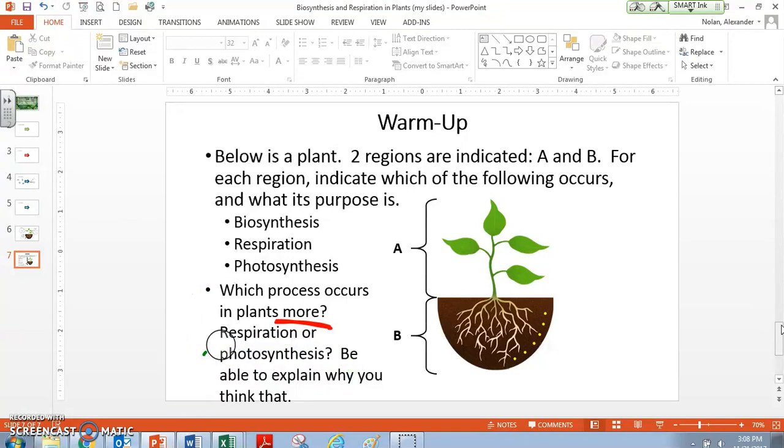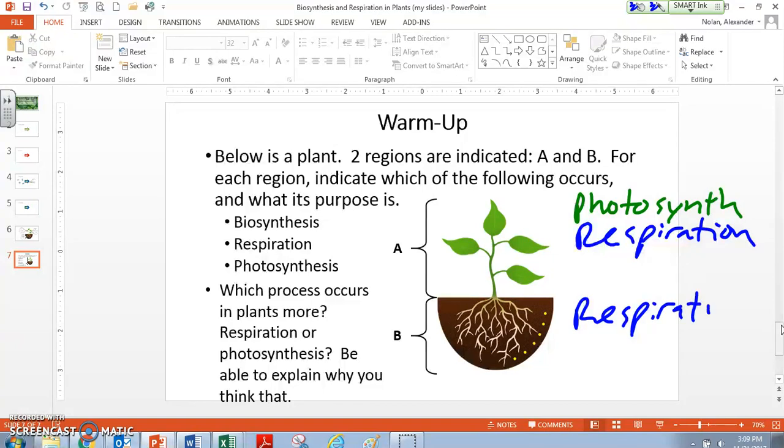Let's just kind of, to wrap this up, think of where are these things going on in the plant. Up here in the leaves, we've got photosynthesis. They definitely are not happening down below in the roots. But we also have respiration going on. And we've got respiration going on down here, both in locations A and B.